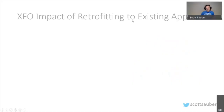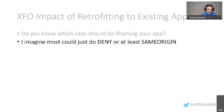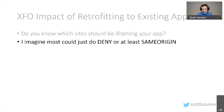The impact of adding X-Frame-Options to an existing app: you have to ask whether any sites should be framing or iframing your app. Most sites could use deny or at least same-origin. Some developers frame a new site inside an old one or vice versa during migrations, so you need to know whether your application has those scenarios.